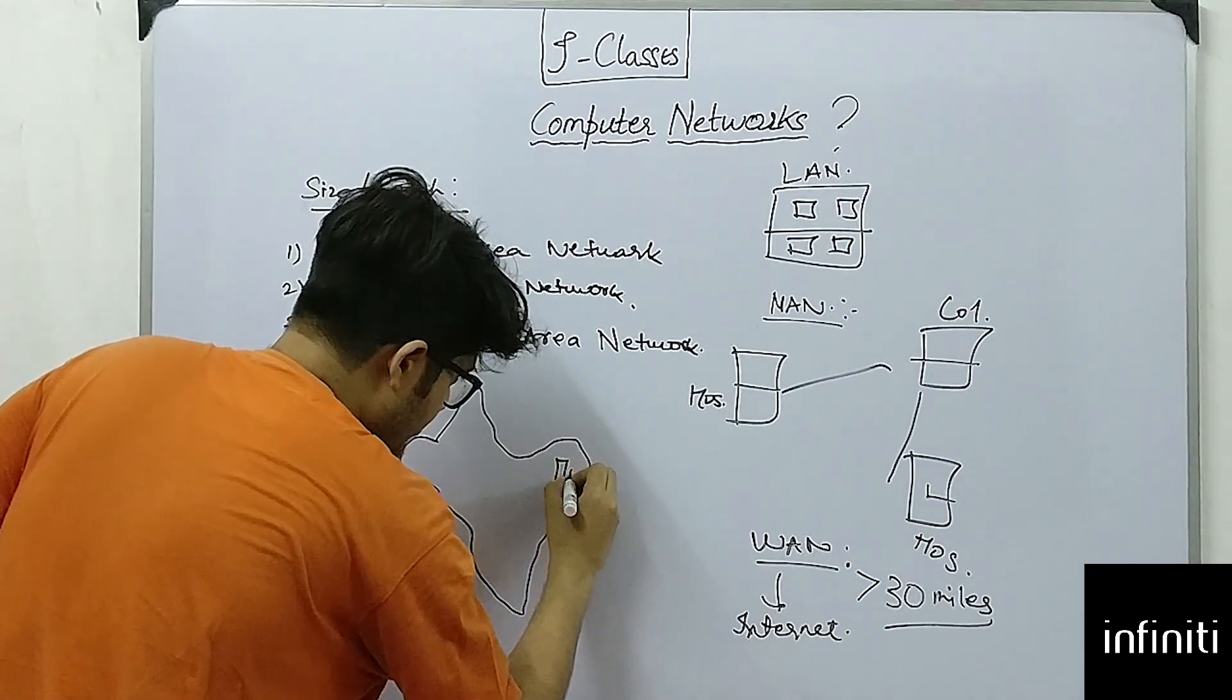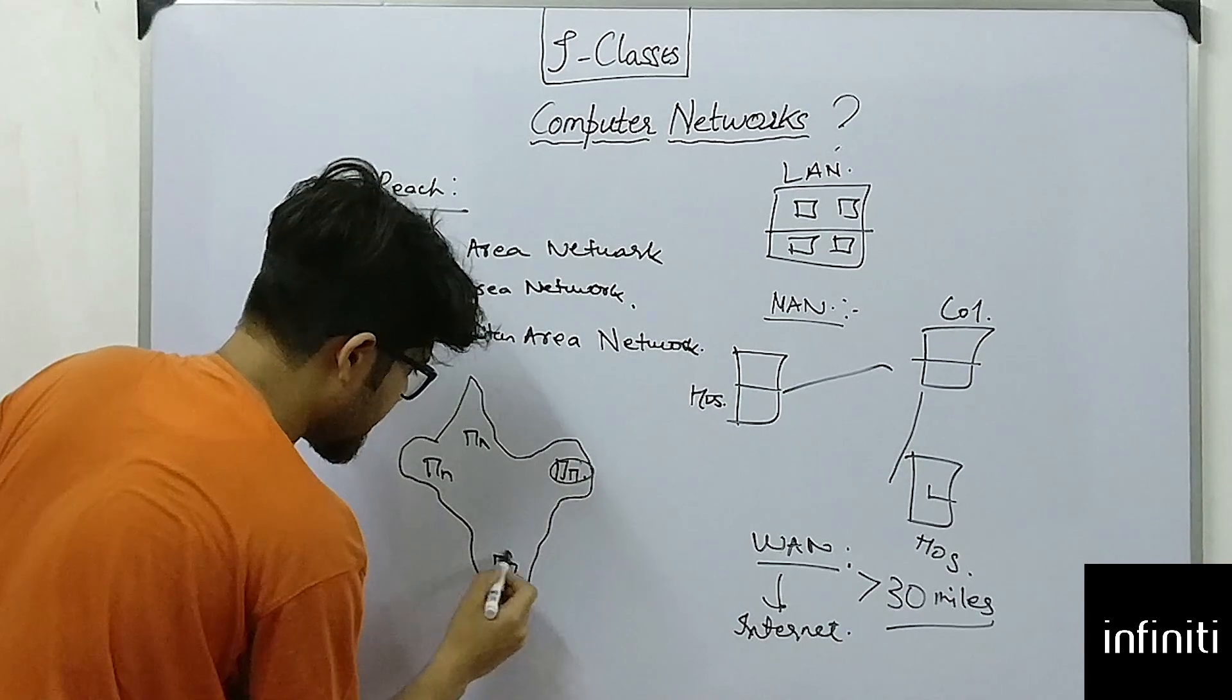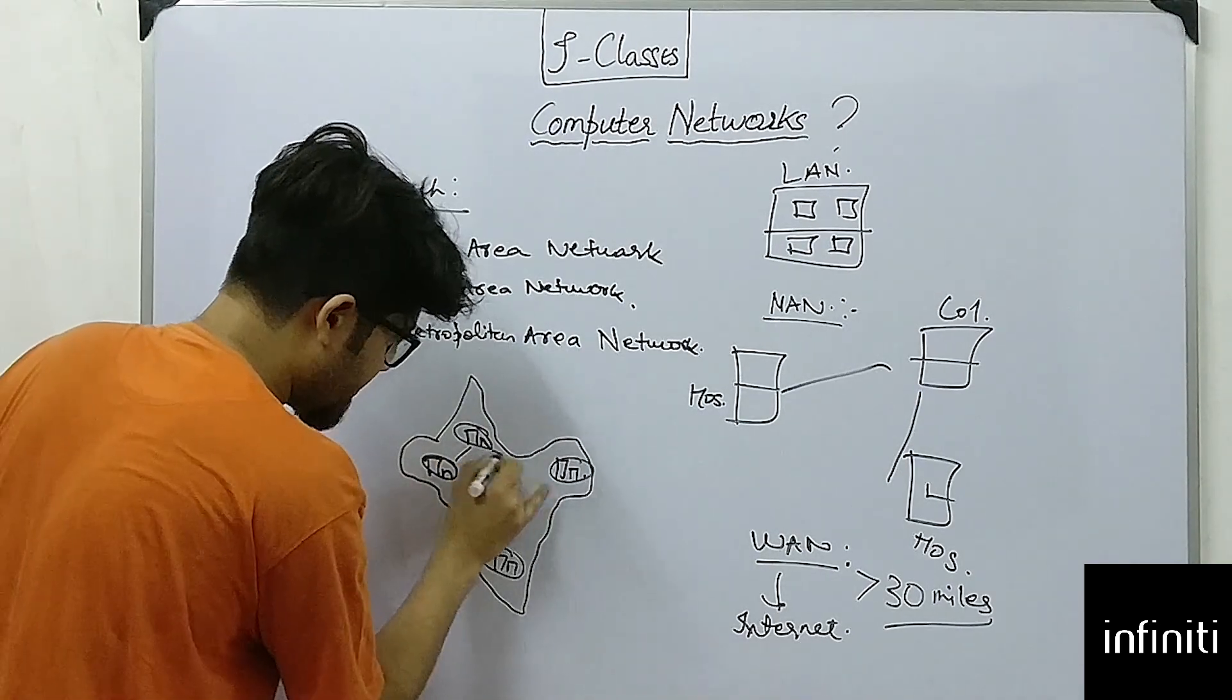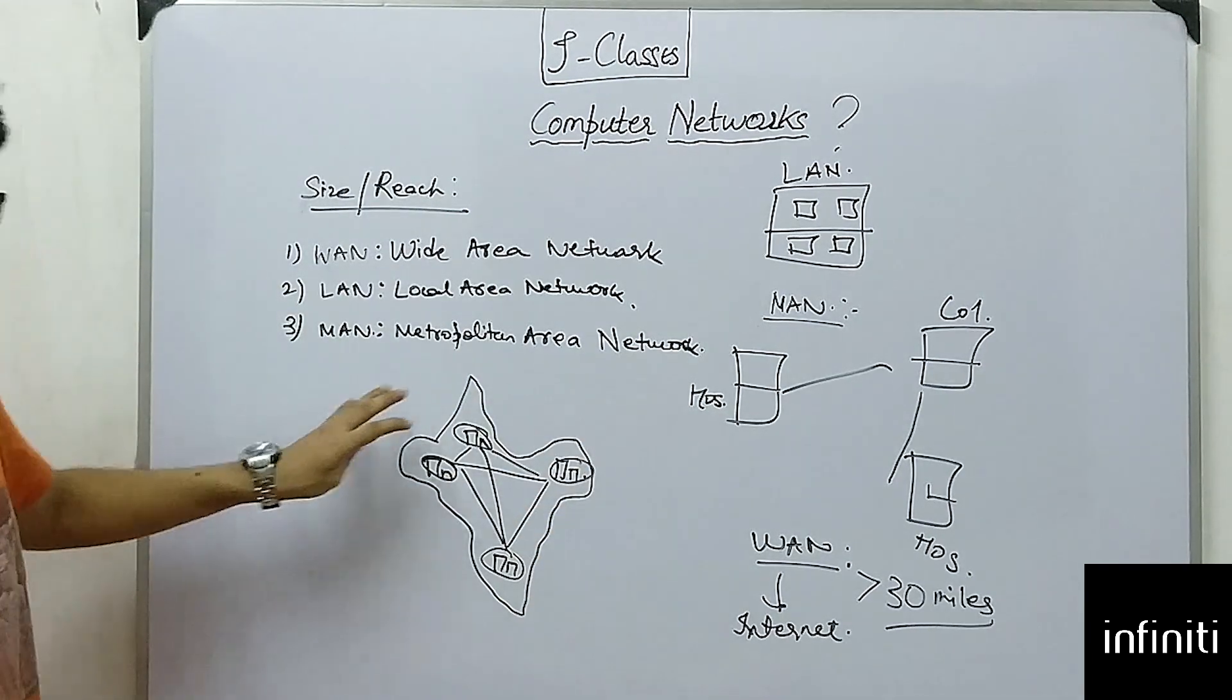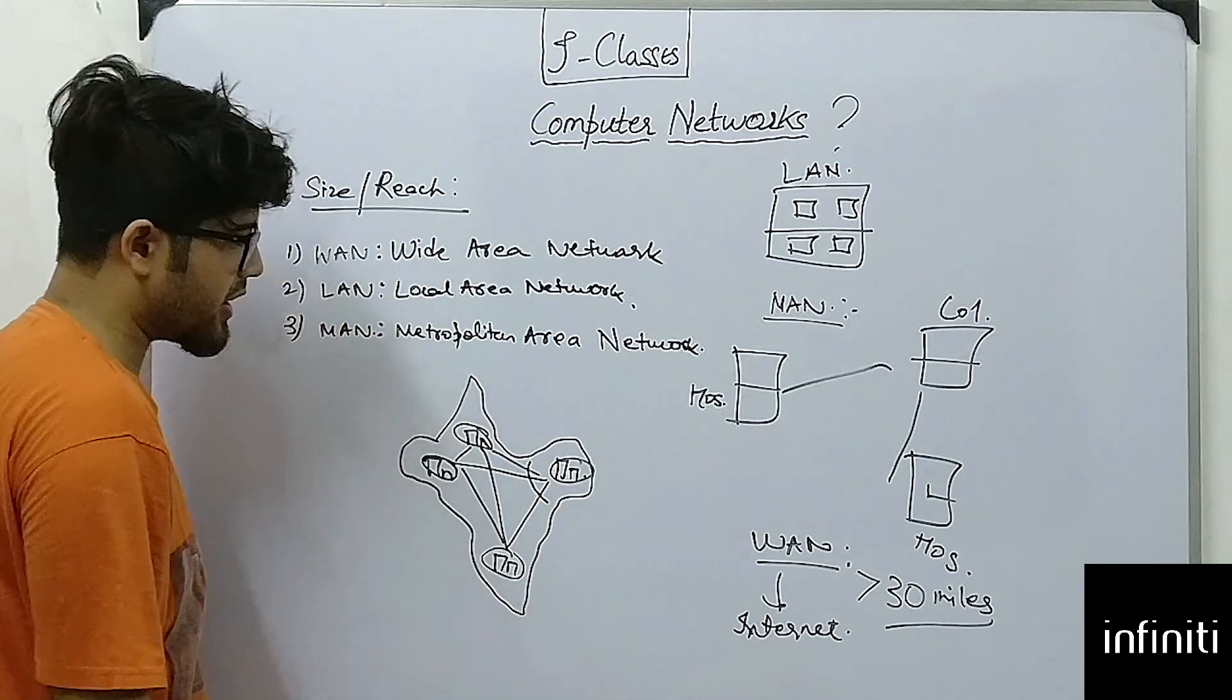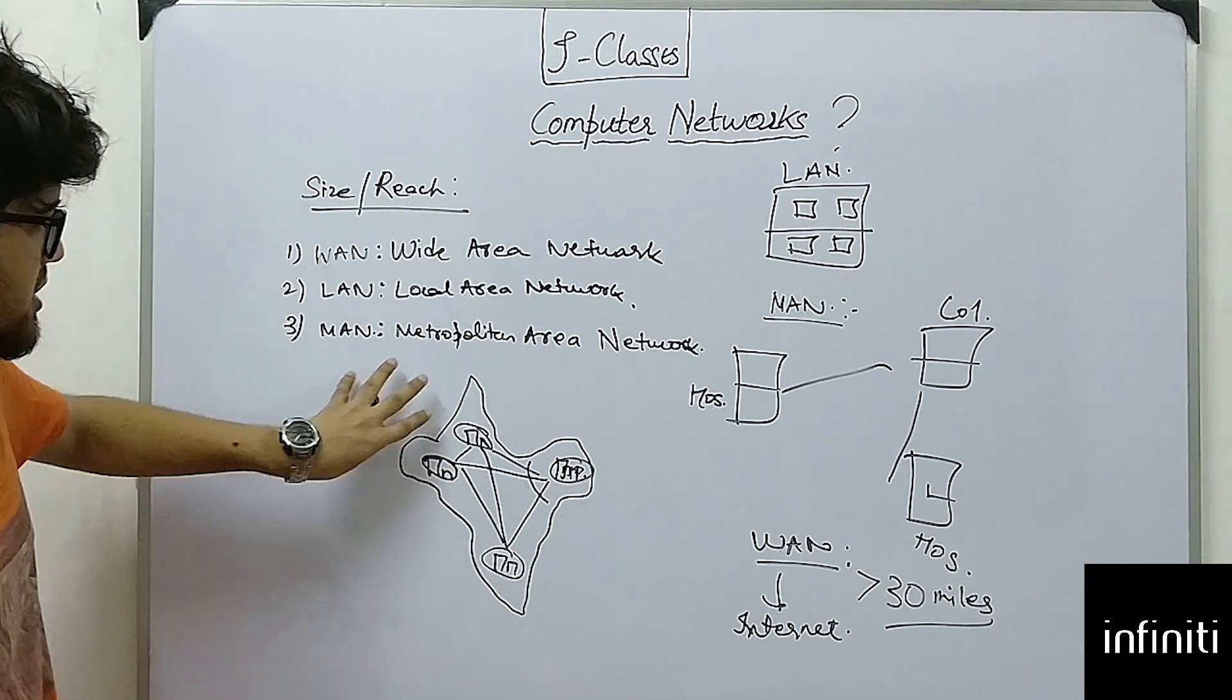These are different metropolitan area networks like one in Kolkata, one in Chennai, one in Gujarat, and one in Delhi. So these are connected, and this network can be termed as wide area network because different networks are connecting to each other. Mind this—if we disconnect this network, it will still be termed as a network because there are devices which are connected within them. So this is wide area network.